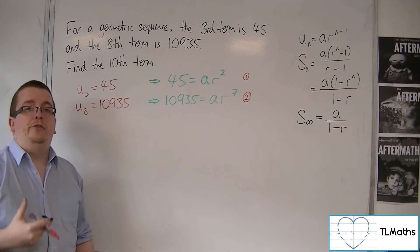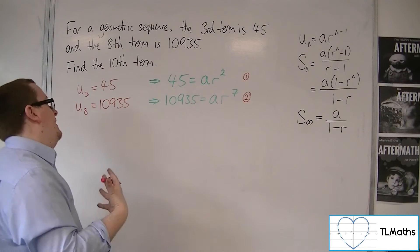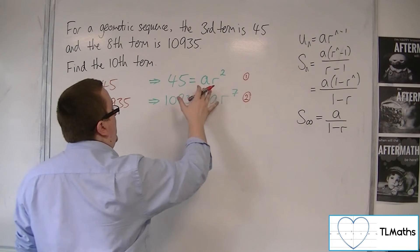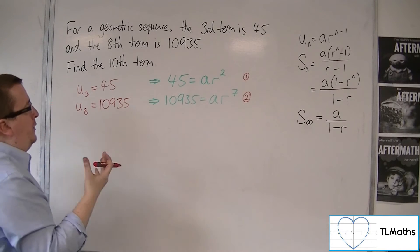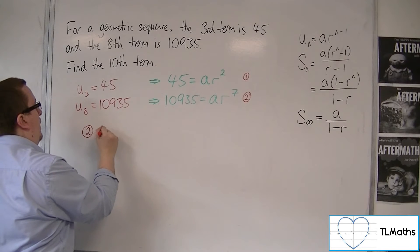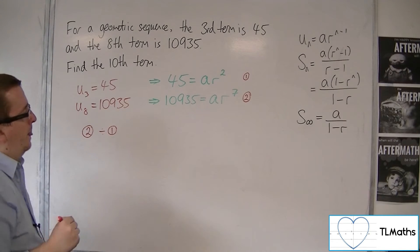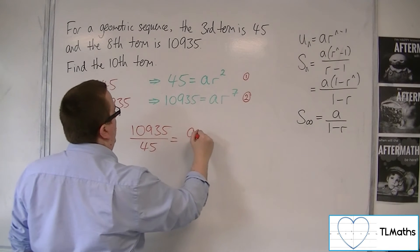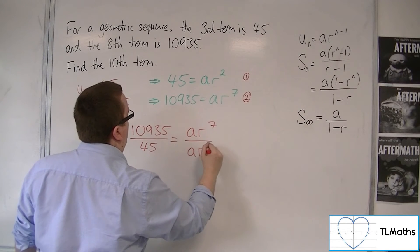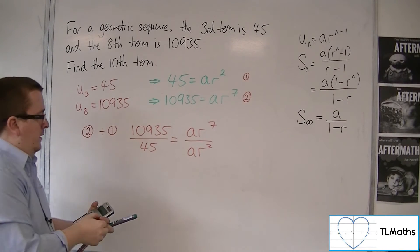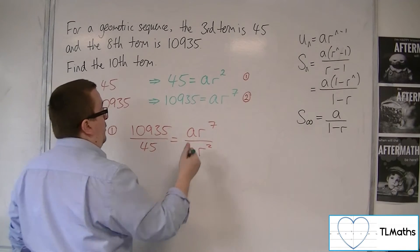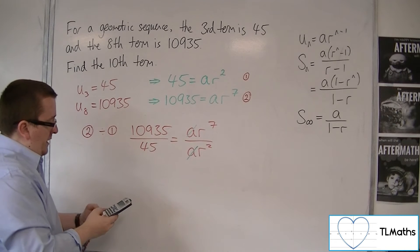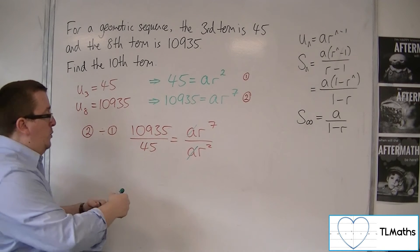Now, in order to solve equations of this form, what you need to spot is how we can divide one equation by the other in order to cancel out the A's. So you could divide equation 2 by equation 1, and we would get 10,935 divided by 45 is equal to A times R to the 7 over A times R squared. Now, why we did this was because the A's now cancel. You've got 10,935 divided by 45, and that's 243.